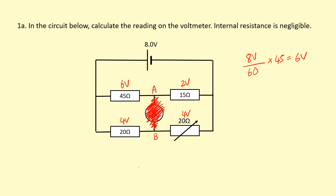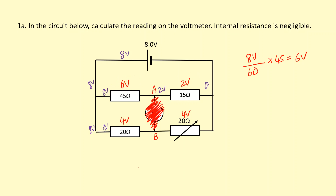What I've written there is the potential difference — how much energy is used per unit charge across those components. Now to figure out the potential at A and B, I'll write the potential, which is like the energy the charge carries. Here it's eight volts, and all the way across these lines it remains eight volts because no energy has been used. Then because it uses six volts across the 45 ohm resistor, it will have two volts remaining going across the 15 ohm resistor.